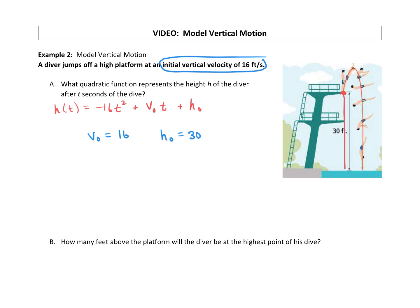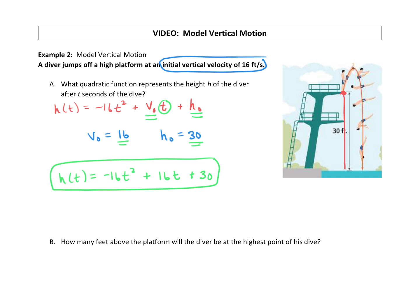Now to write a quadratic function that represents the height h of the diver after t seconds, we plug those values in. So h of t equals negative 16t squared plus 16t plus 30. This function will give you the height of the diver after any number of seconds — we can plug in any number of seconds to figure out how high the diver is.